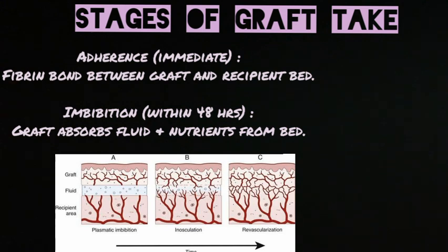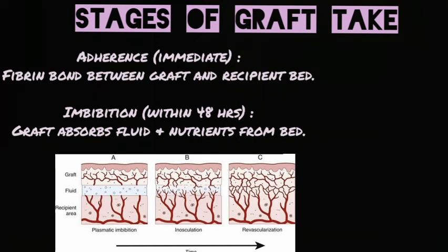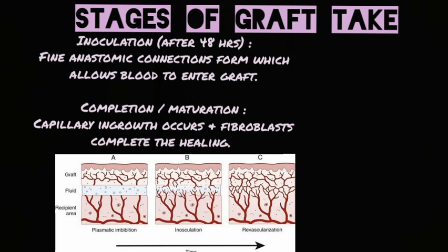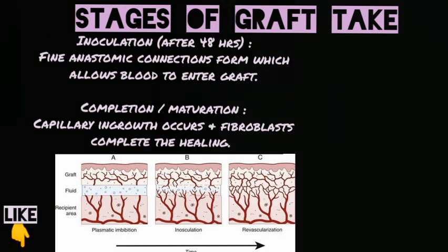The stages of grafting explain how the graft becomes part of the wound tissue. Immediately after grafting, a fibrin bond forms between the graft and the recipient bed — this is known as adherence. Within 48 hours, the graft absorbs fluid and nutrients from the plasma of the granulation tissue, called imbibition. After 48 hours, fine anastomotic connections form so blood can directly enter the graft — this is called inosculation. Finally, capillary ingrowth occurs and fibroblasts complete the healing, known as maturation.